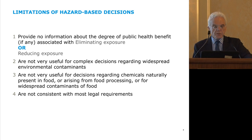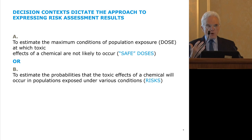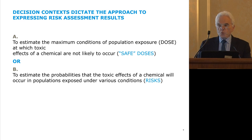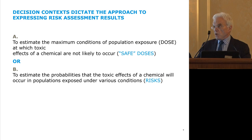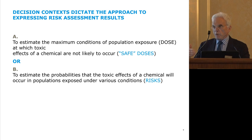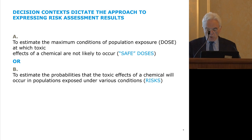Let me talk about two different ways we express risk assessment results. The first looks at maximum conditions of population exposure — the dose at which toxic effects are not likely to occur, the so-called safe dose — useful for some kinds of decisions. We also have a different model which attempts to look at probabilities of toxic effects that will occur in populations under different conditions of exposure, and how risk changes with exposure. That model has advantages over the first one in many contexts.